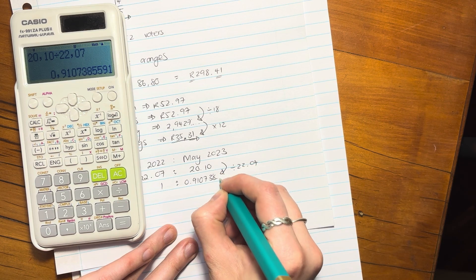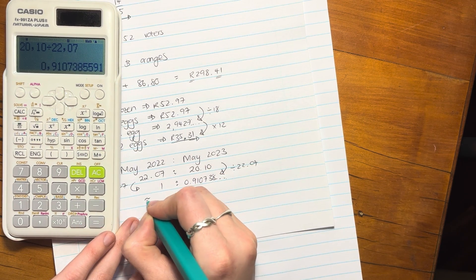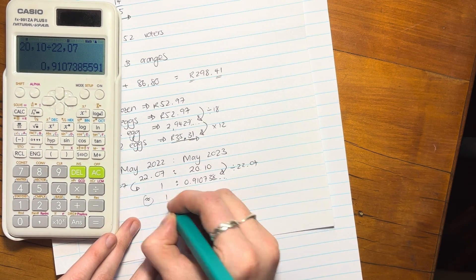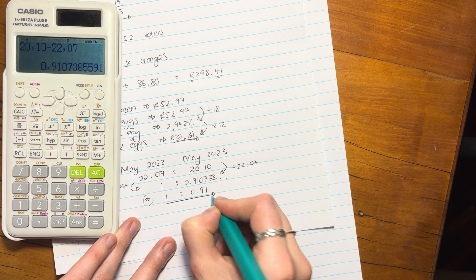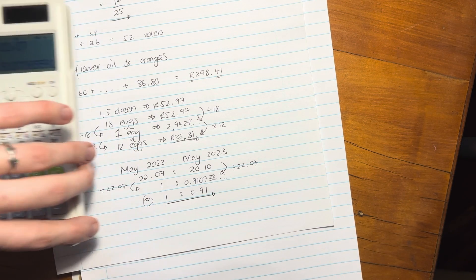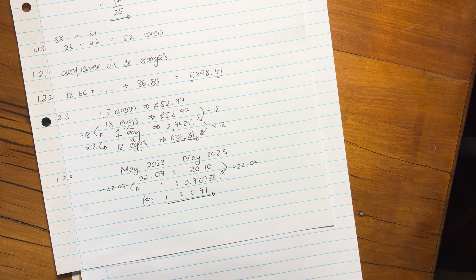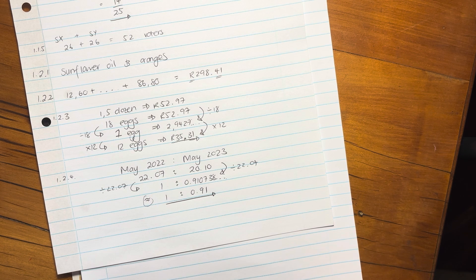You just write it out in full and then you can say this is equivalent. Remember that just means equivalent. 1 to 0.91. And there's your answer. So do you see how this question, there was a lot of ratios, a bit of interpretation, but the main thing was actually just reading the question so that you knew what was being asked. Let's move on to the next question.